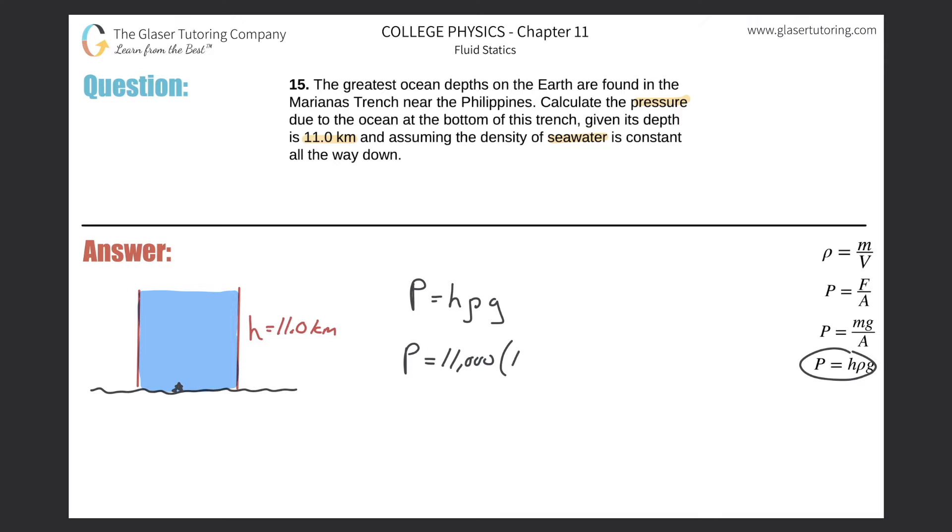It's slightly more dense than regular water because of all the salt in it, so this is 1.025 times 10 to the third, and that's the value in kilograms per cubic meter, and then times gravity, so 9.8.